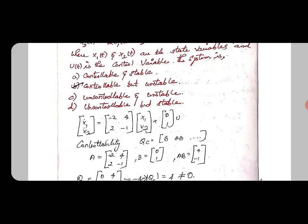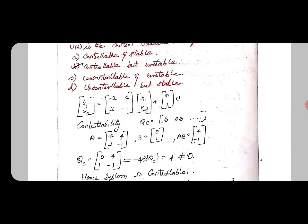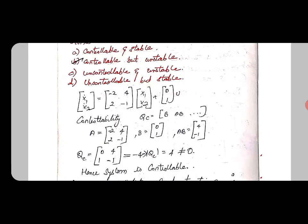Then A = [-2 4; 2 -1], B = [0; 1], then AB = [4; -1]. Qc = [0 4; 1 -1]. When we take the determinant, |Qc| = 4, which is not equal to 0. When the determinant of the matrix is not equal to 0, then the system is said to be completely controllable.